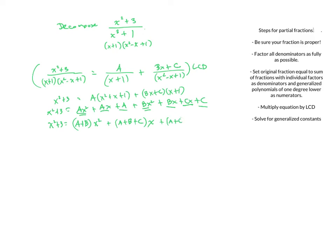By the rule that equal polynomials must have equal coefficients for like terms: the x squared coefficient gives A plus B equals 1; the x coefficient gives A plus B plus C equals 0; and the constant term gives A plus C equals 3. This is a system of three equations in three variables, which we can solve but it can be a little time-consuming.